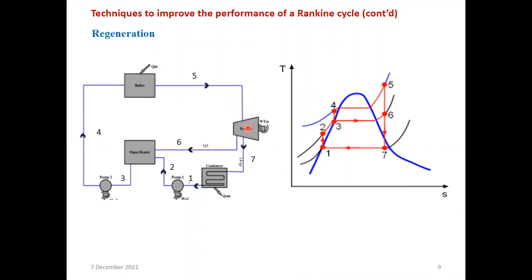In regeneration, after the boiler we expand steam in the turbine, which is integrated to a generator to get power output. After the turbine, we split the steam into two parts: some is sent back to the condenser, and some is taken to an open heater where we heat the steam again — particularly if it contains any water vapor. We give heat in the open heater and then send it back to the boiler. This is regeneration.